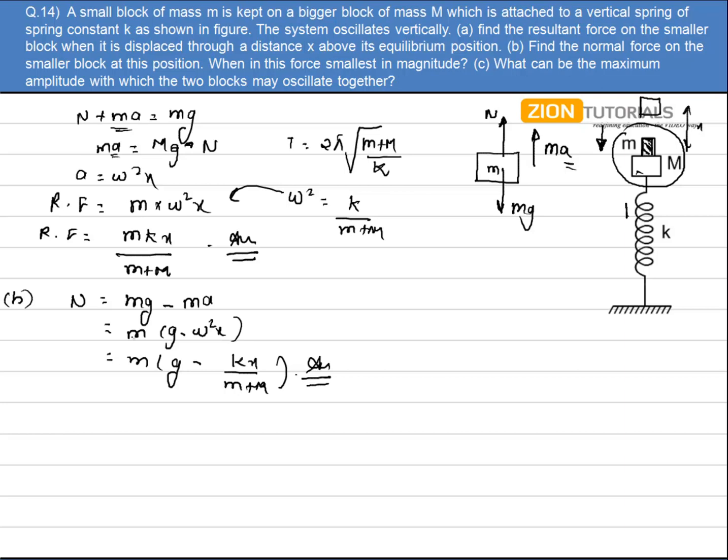And secondly I have to find when is the force smallest in magnitude. Now one thing is very clear that I want the force, that is the normal force, to be smallest. This will be smallest when the acceleration will be maximum. Acceleration will be maximum when x will be equal to amplitude.